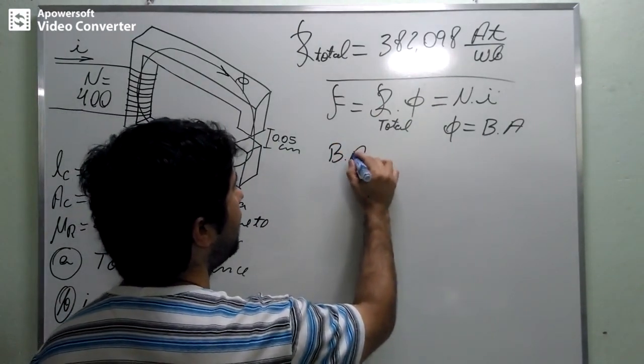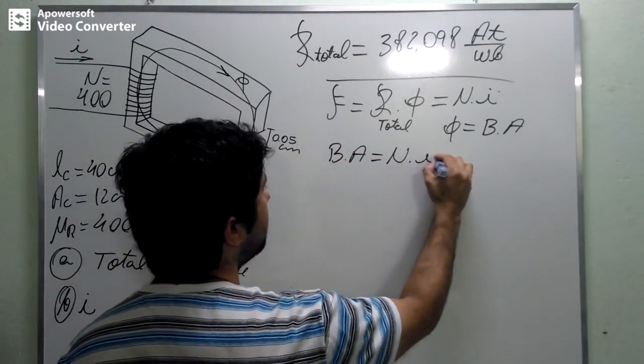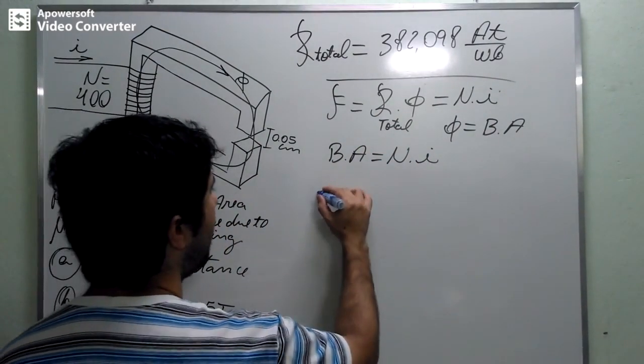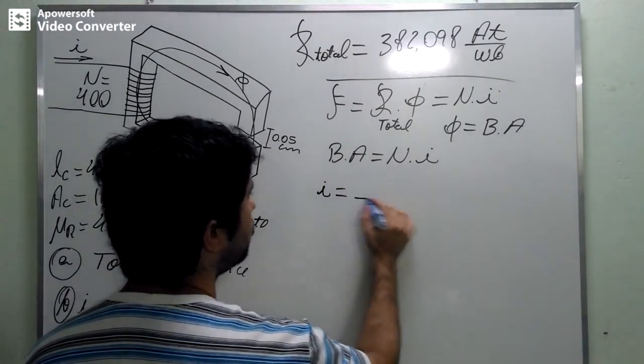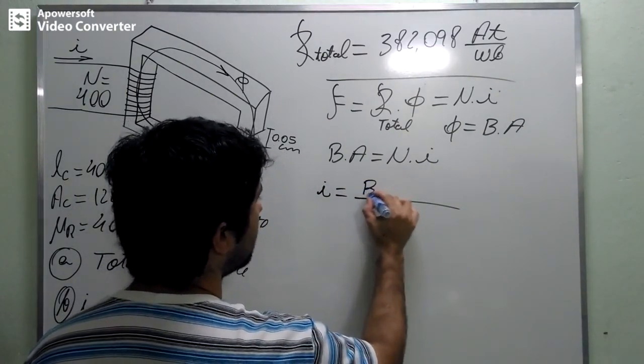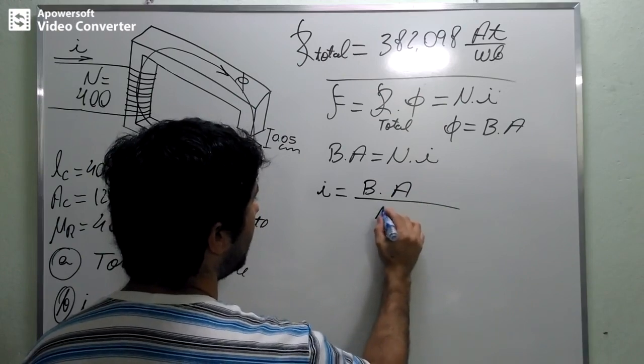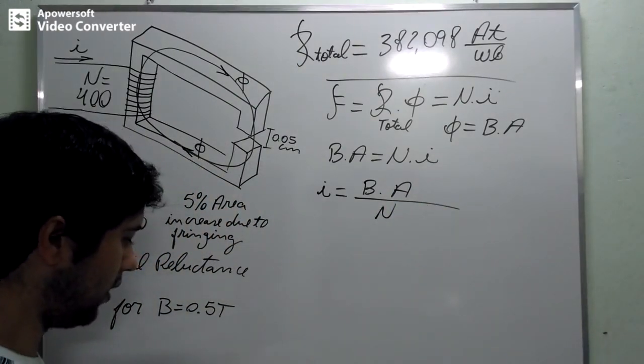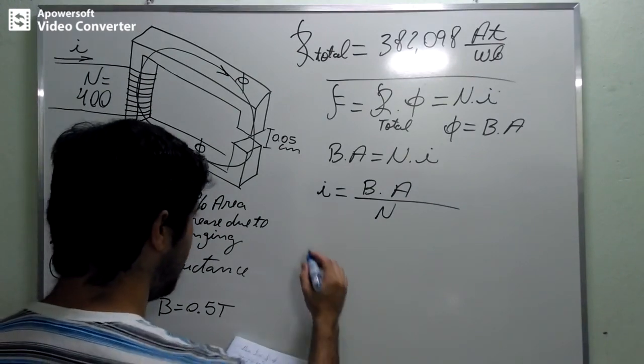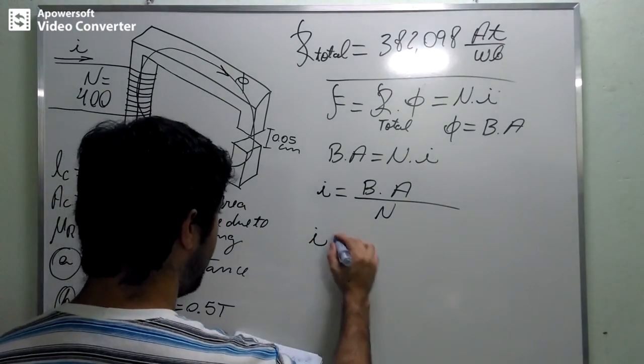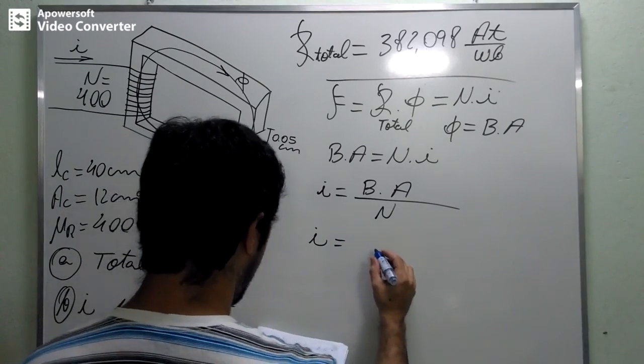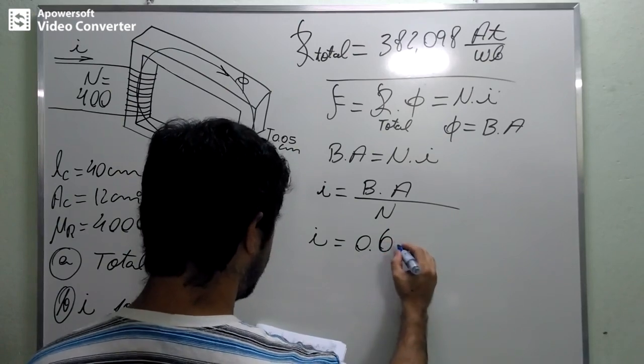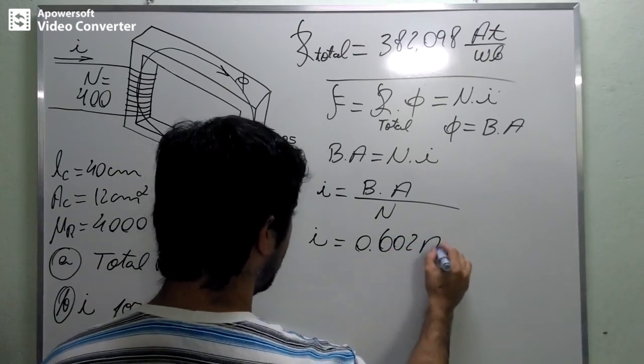So, B times A is equal to N times I. Do you get it? So, I is going to be equal to B times A divided by N. And I already calculated it. You can check it yourself. It is going to be equal to 0.602 amperes.